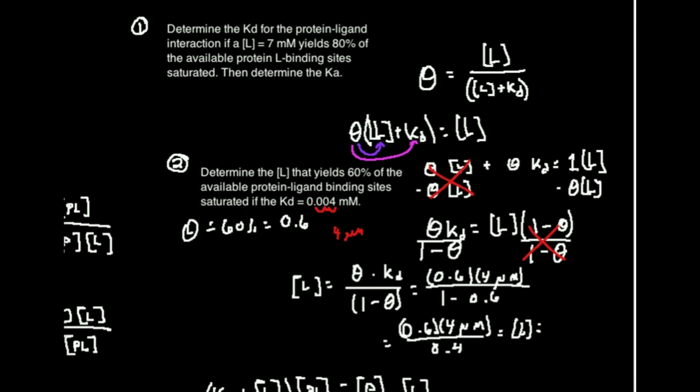And now let me go ahead and determine that concentration. It's going to be in units of micromolar. Hopefully that makes sense. So I'm going to take 4 times 0.6 divided by 0.4.